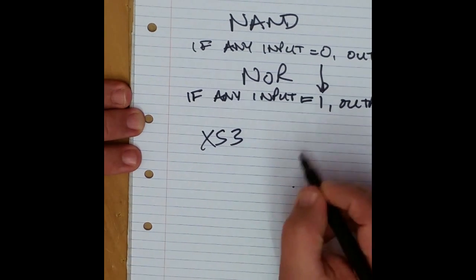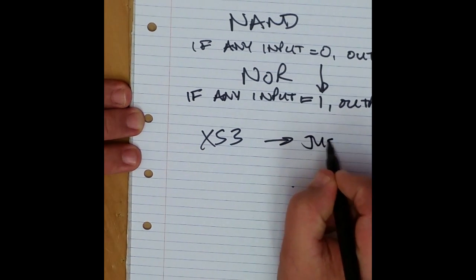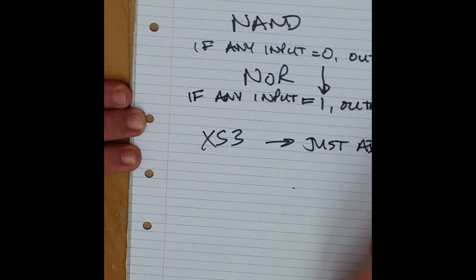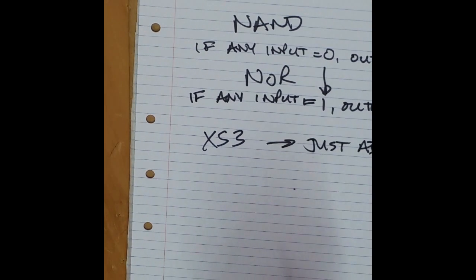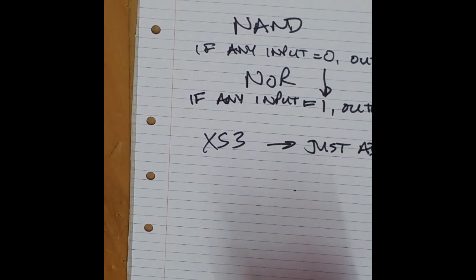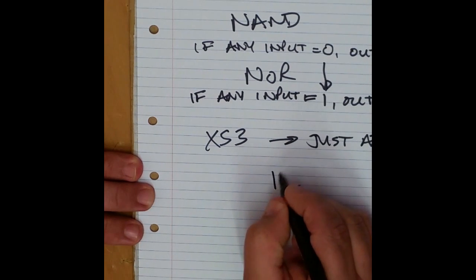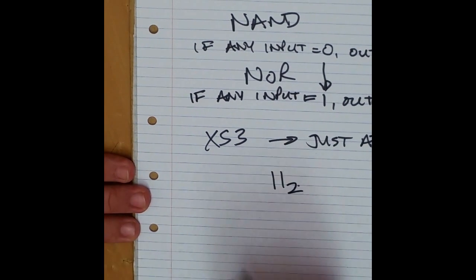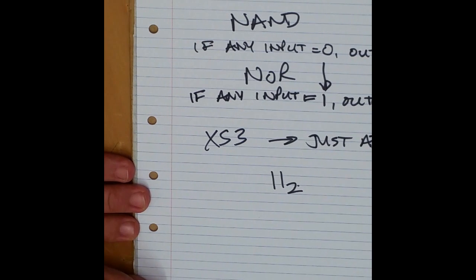Excess-3: just add three. But remember you've added three, so if you're doing arithmetic count how many threes you have to subtract again. You can do it in decimal then convert to binary, or do it in binary and convert to decimal. Remember that in binary, three is 1 1 in base two.